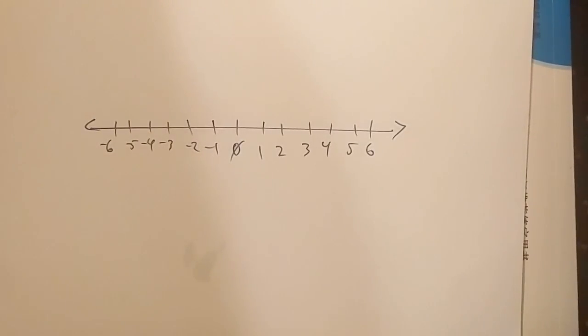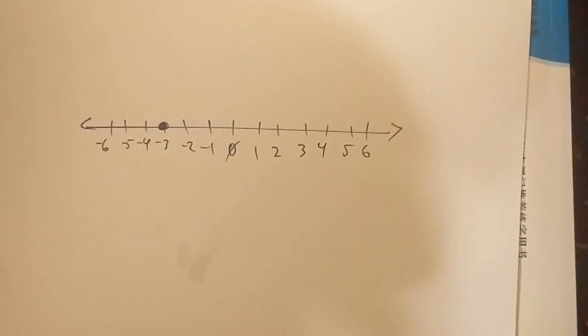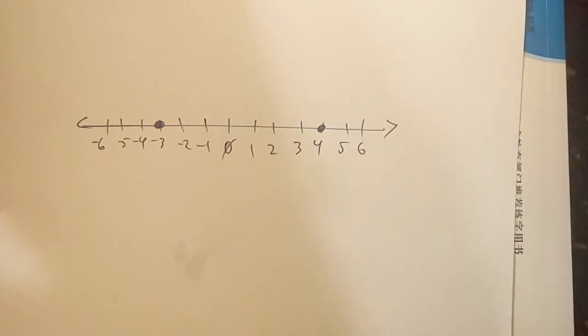But what if I have, let's say, a point at negative three, and it's gone all the way up to four? Well, what is the distance between those two numbers? The easy way to do that is simply just count.